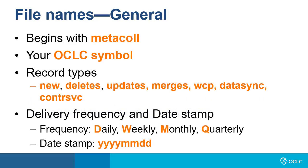Before downloading a file of records, let's discuss how to identify the types of records in your files by understanding how the files are named. In general, a file of records begins with Metacall and your institution's OCLC symbol, followed by the designation for the type of records, which can be new, deletes, merges, WCP, etc.